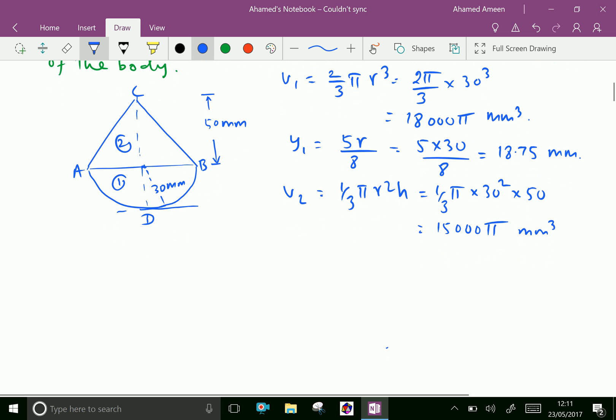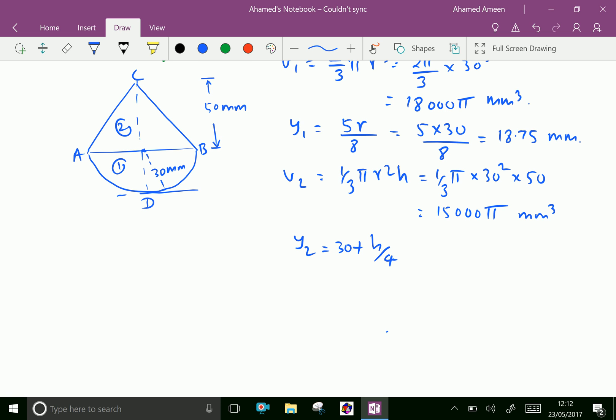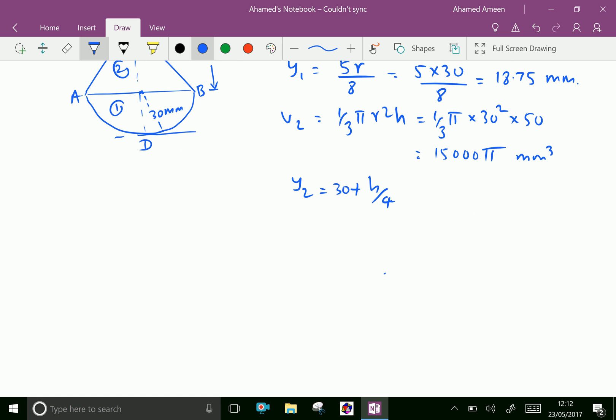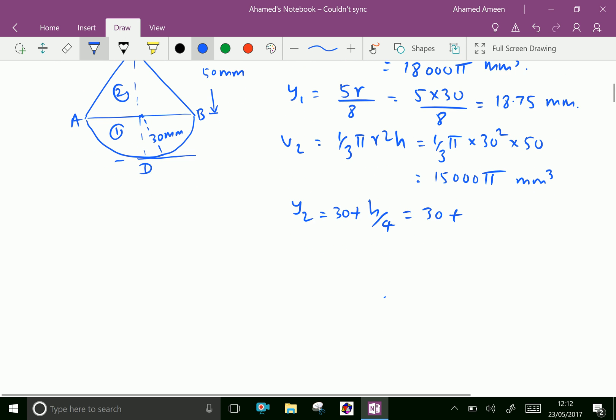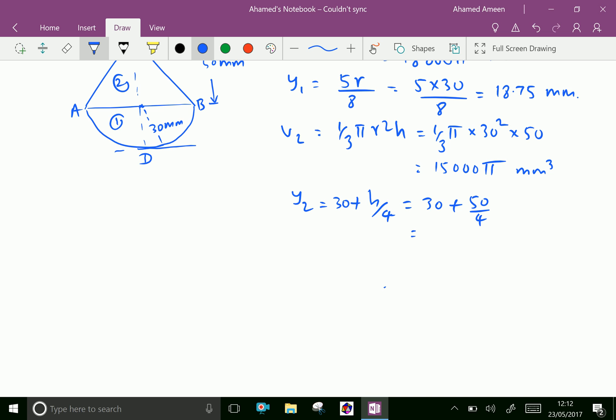Now Y2 is position of center of gravity of a cone from its base, which is h by 4 plus the radius of the hemisphere is 30. Y2 is the distance from the base D including the radius of the hemisphere plus the position of CG of a cone from its base, which equals 30 plus 50 by 4, which equals 30 plus 12.5 equals 42.5.